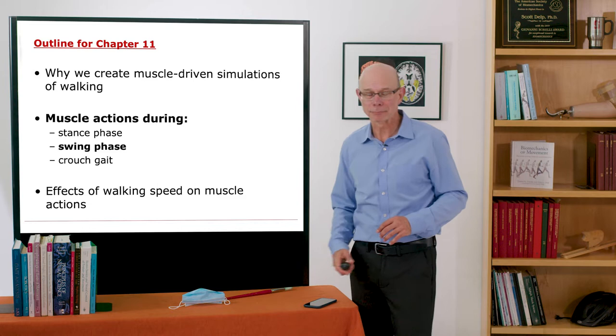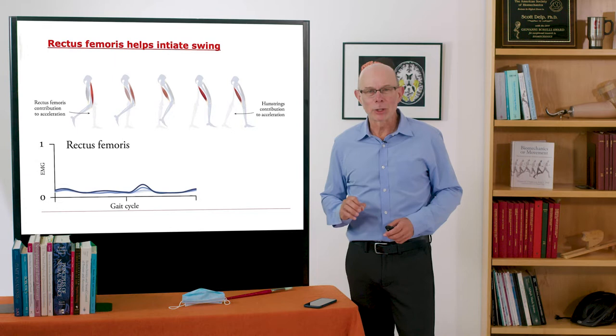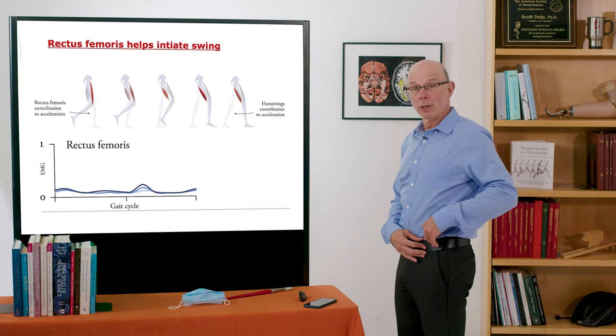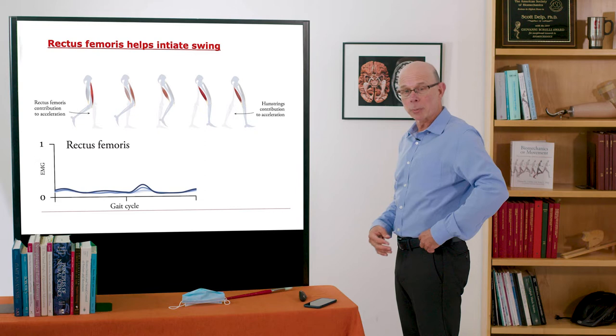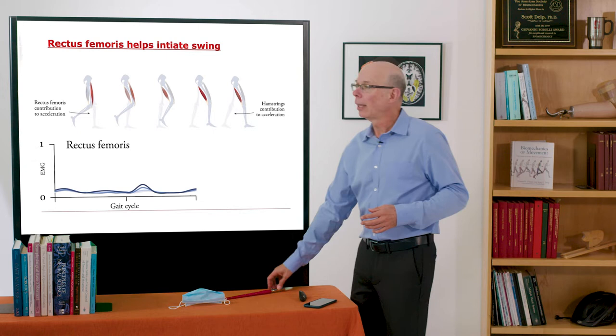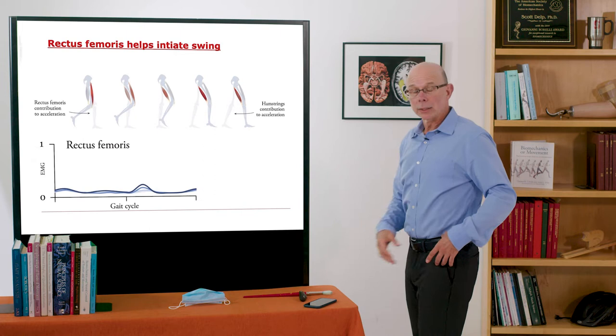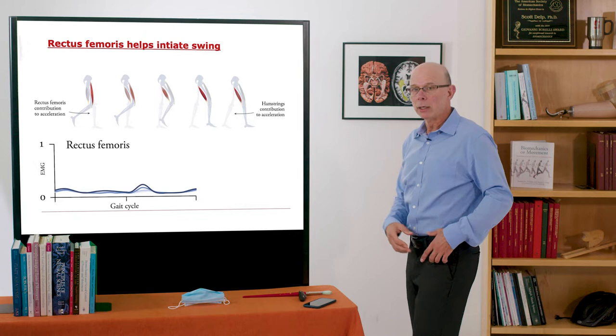So rectus femoris helps initiate swing. Recall that rectus femoris is on the front of the thigh. It originates up here on the pelvis at the anterior superior iliac spine and goes down and attaches to the patella. So it's one of the quadriceps and you can see it here. It generates a hip flexion moment and it generates a knee extension moment, so it can induce motion of those degrees of freedom.